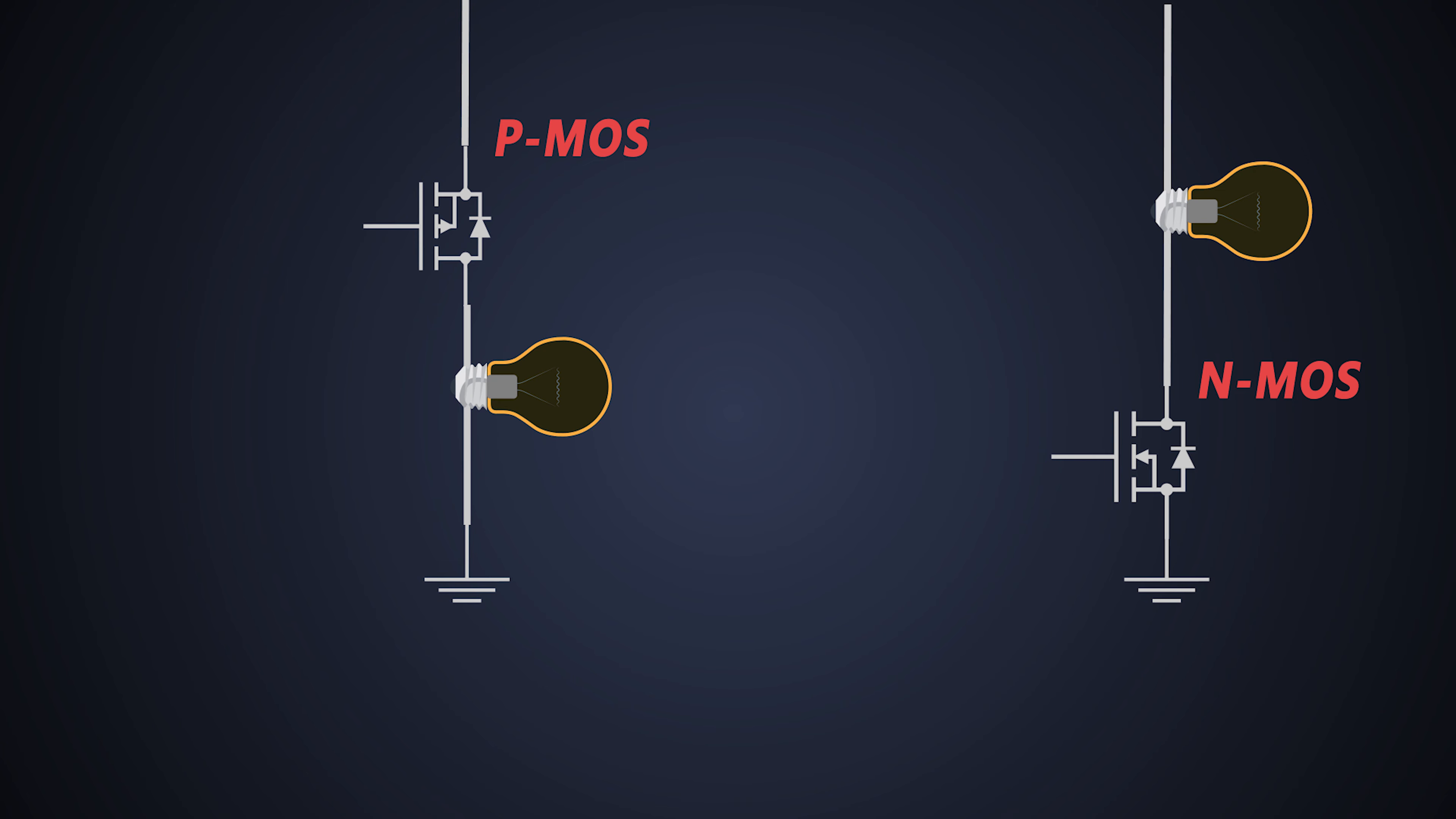The n-channel MOSFET turns ON when a gate threshold voltage is provided across the gate and source of the MOSFET. When there is no input given to the gate, that means if it is connected to ground, the n-channel MOSFET turns OFF.